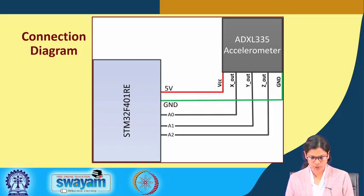The voltage source VCC will be connected to plus 5 volt, the ground will be connected to the ground pin of the STM board and the x, y and z out analog pin outputs will be connected to the analog input pins A0, A1 and A2. This is how the connection goes.